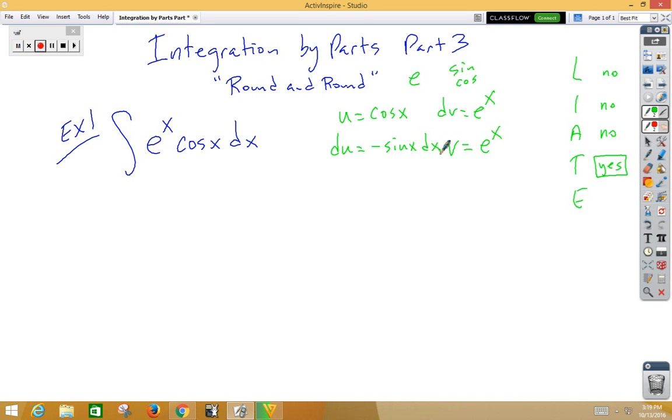Now the key to round and round problems is to always copy the original problem on every single step, and we'll see why that's important in a couple of minutes. So let's go ahead and start with uv minus the integral of vdu. So u times v is e to the x cosine x, that part's done, minus the integral of vdu, which would be a negative, e to the x sine x dx.